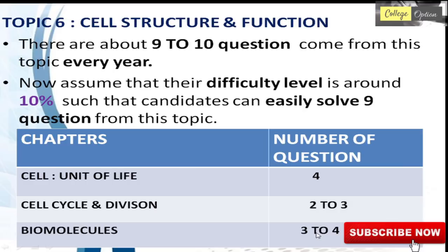The sixth topic is Cell Structure and Function, with about 9 to 10 questions asked every year. The difficulty level is about 10% and candidates can easily solve 9 questions. This topic has three chapters: Cell - Unit of Life with 4 questions, Cell Cycle and Division with 2 to 3 questions, and Biomolecules with 3 to 4 questions.